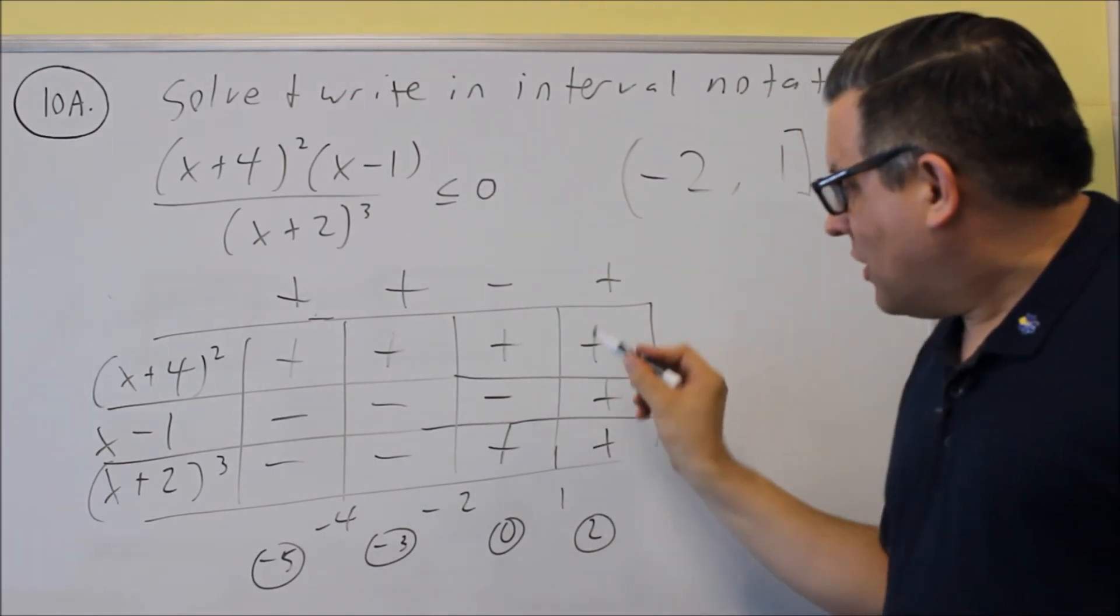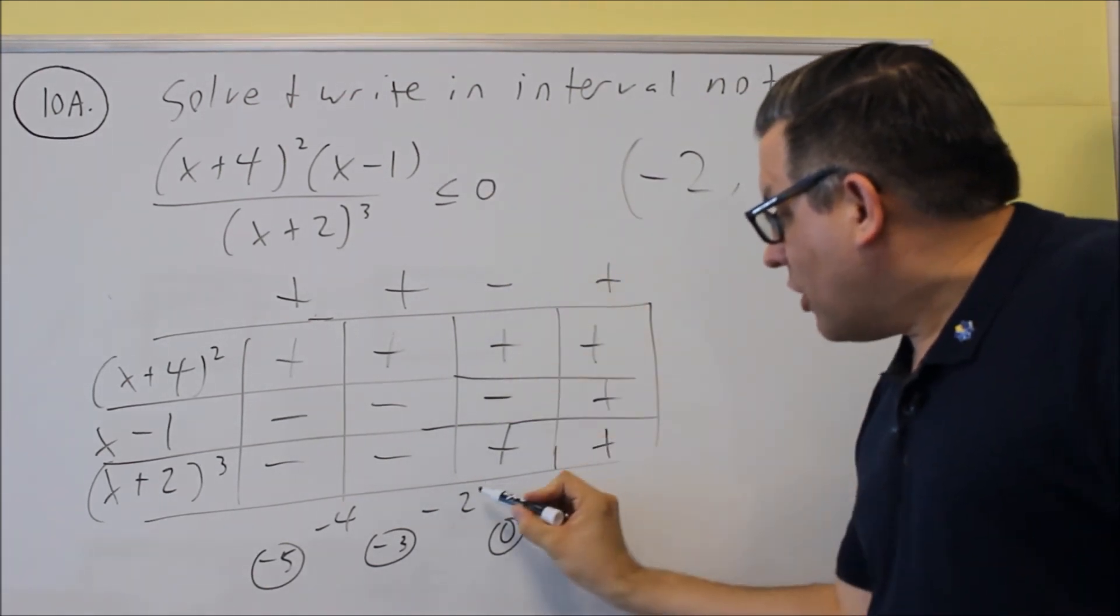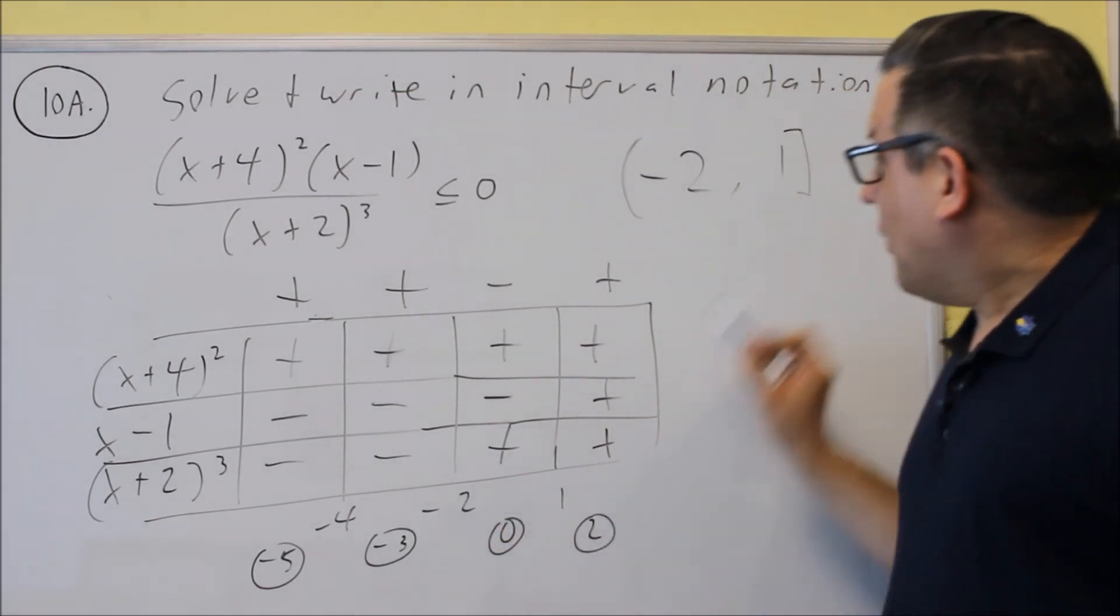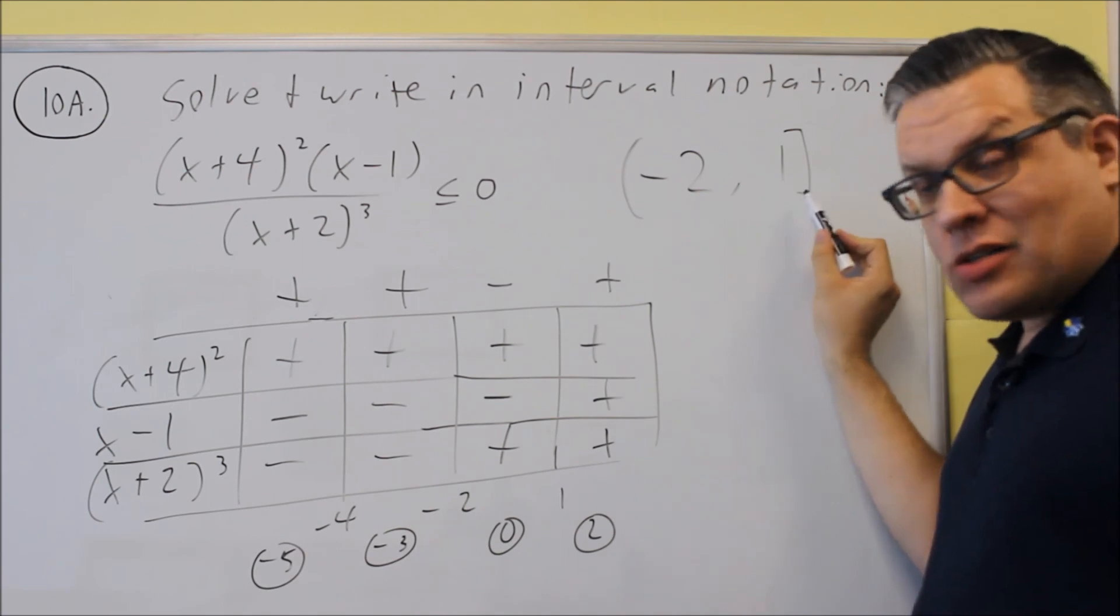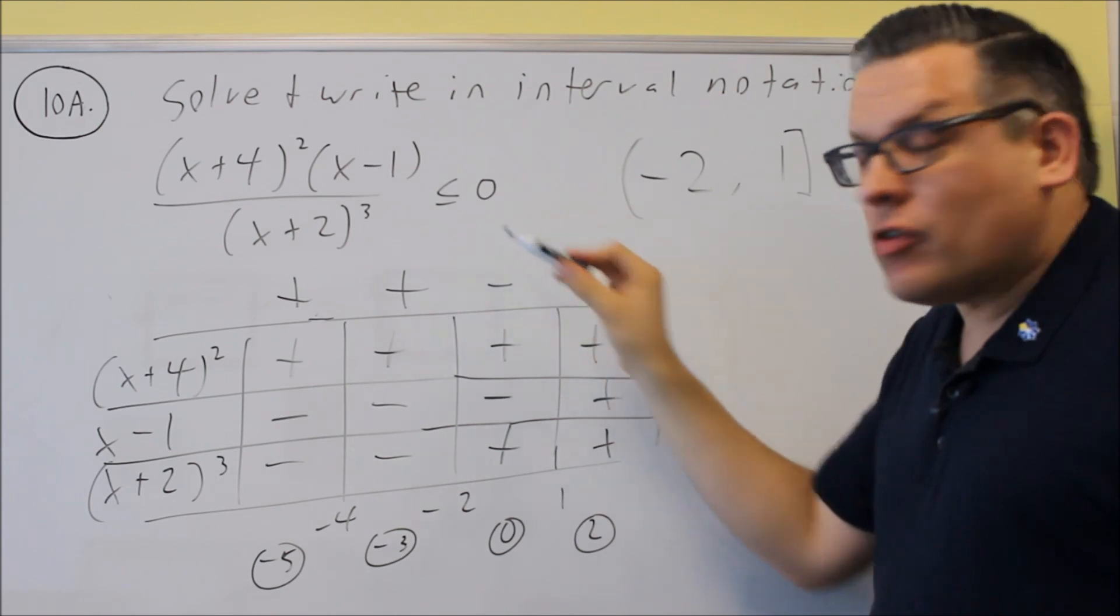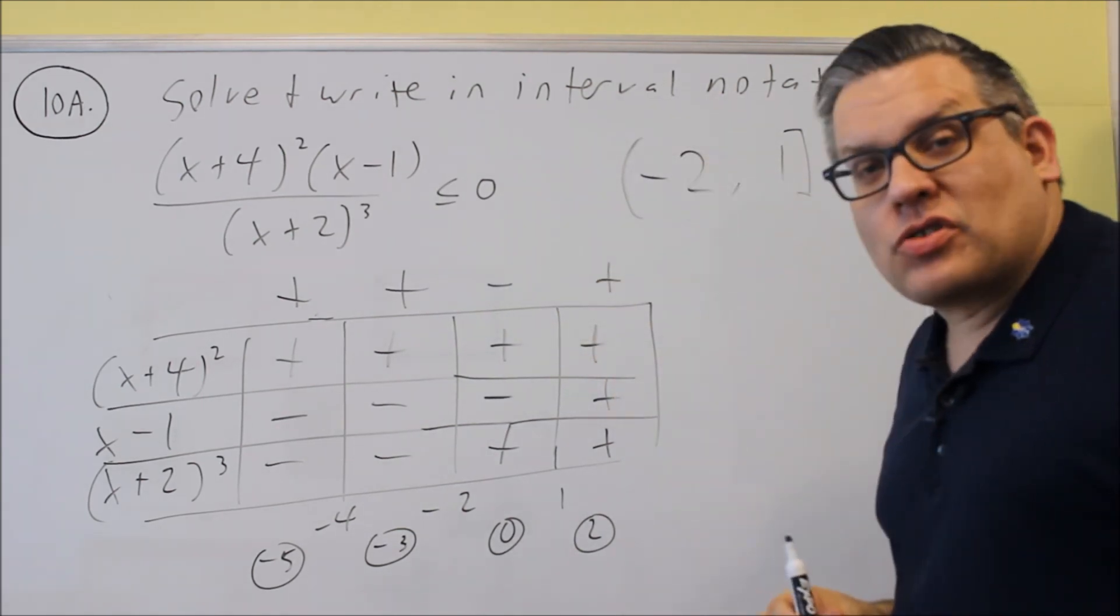So again, less than, you look for negatives. This is the region that has a negative in it. It's between negative 2 and a 1, and again, typically we would have brackets, but can't divide by zero. So that's why negative 2 cannot be included, so it doesn't matter what sign I have here, I've got to put a parenthesis on that.